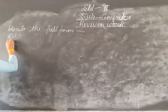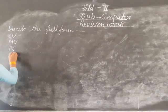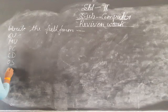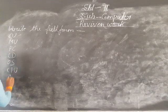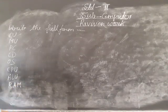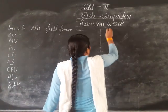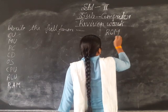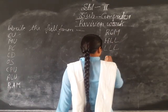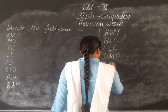Write the full forms of the following abbreviations: CU, MU, TC, CV, OS, and CU, AU, RAM, ROM, HLL, BROG, BMP, UPS.